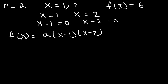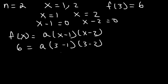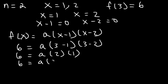We need to determine the linear coefficient a. Now when x is 3, the function has a value of 6. So let's replace f of x with 6 and x with 3. So 3 minus 1 is 2, and 3 minus 2 is 1, and 2 times 1 is 2. Now let's divide both sides by 2. 6 divided by 2 is 3. So a is 3.